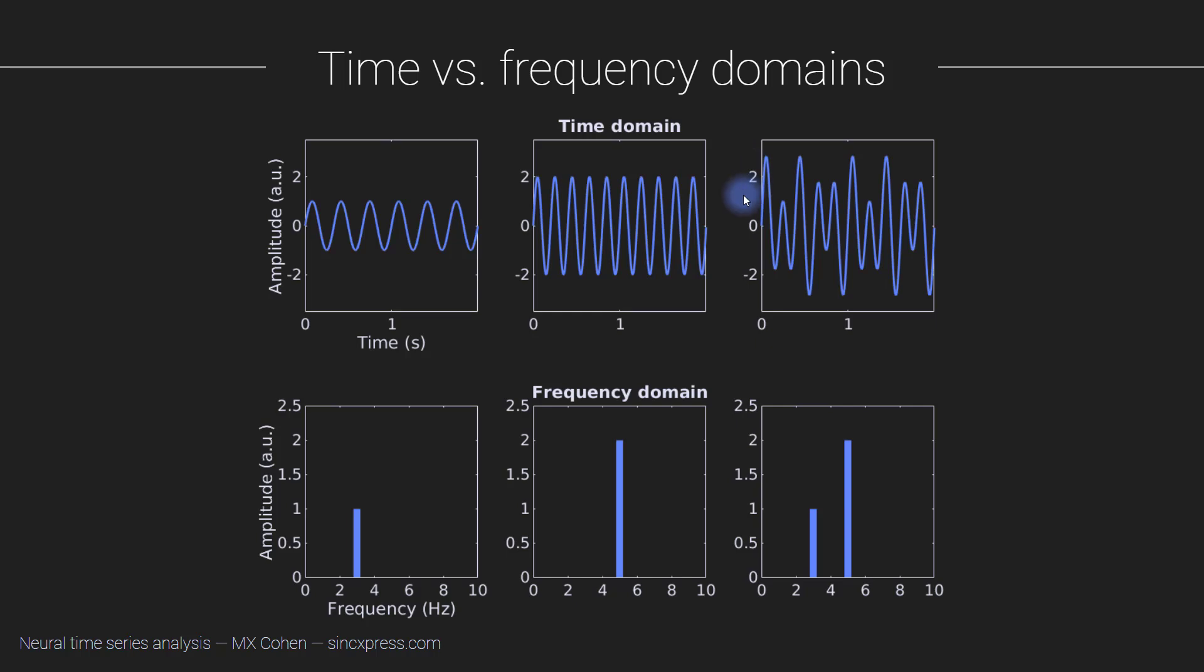This right here highlights one of the main advantages of looking at a signal in the frequency domain compared to the time domain. If the signal contains rhythmic narrow-band components, which is the case here, you can understand the signal much better and much faster when looking at it in the frequency domain compared to the time domain.